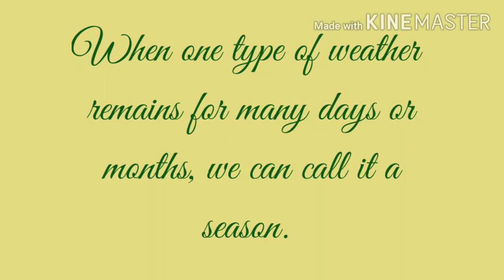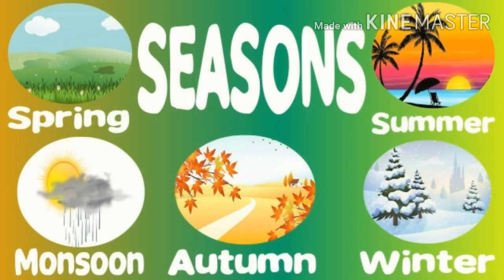When one type of weather remains for many days or months, we call it a season. There are five different seasons in a year: Summer, Monsoon, Winter, Autumn and Spring.